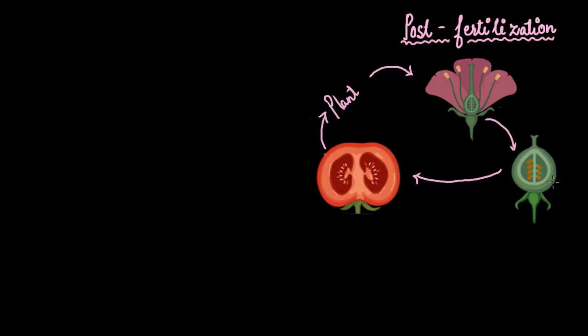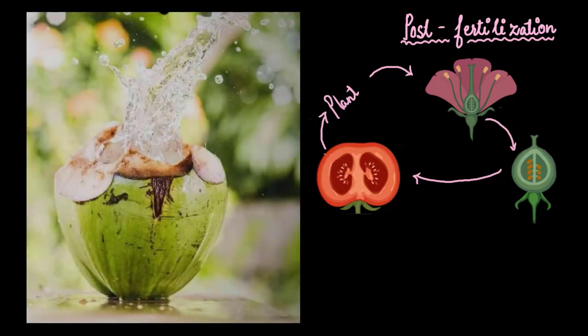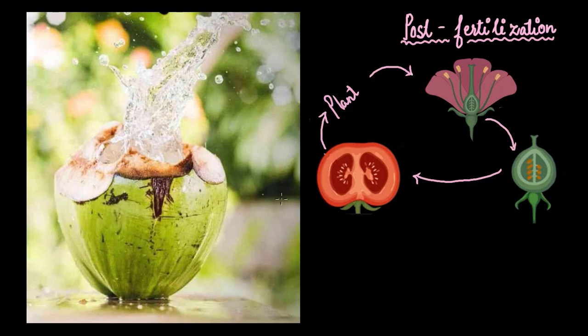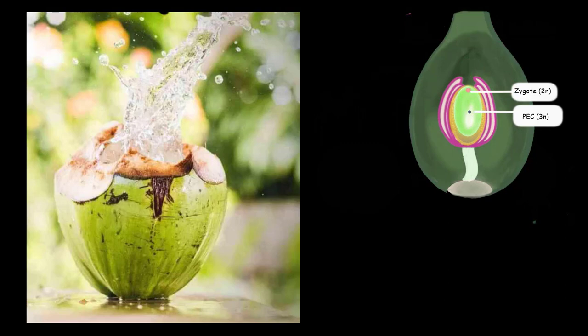Now that we know how a fruit is formed from a flower, let me ask you about one of my favorite fruits: the coconut. Can you tell which part of the ovary gives rise to the refreshing coconut water and the white coconut meat or kernel inside? Let's find out. For that, we need to go back to the picture of the ovary, and this time we have only labeled the zygote and the primary endosperm cell.